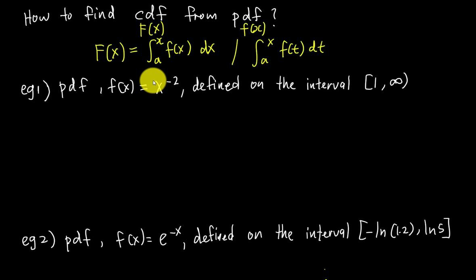To get the cumulative distribution function, I will start from 1, but I will not go all the way to infinity. Why? Because if I integrate from 1 to infinity, I will get 1, which is not what I want. For the CDF, we integrate from 1 to x, where x is variable.